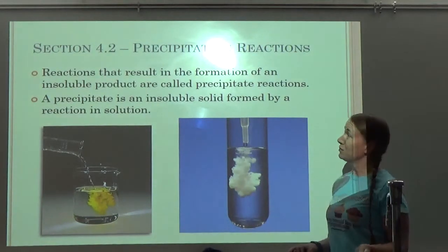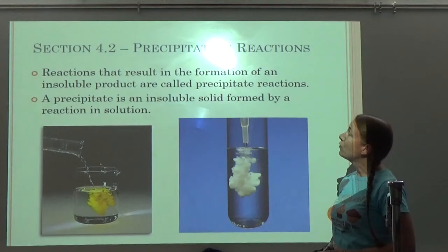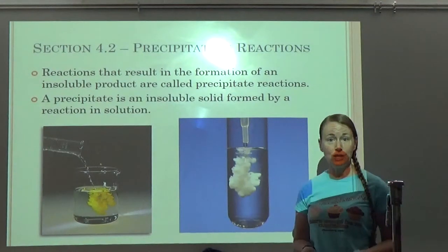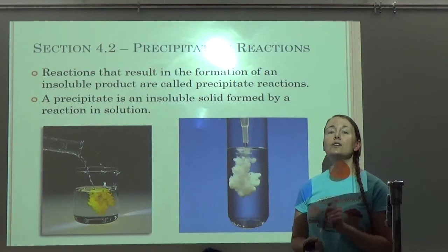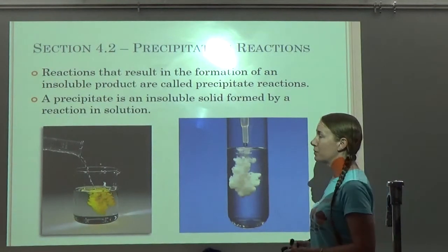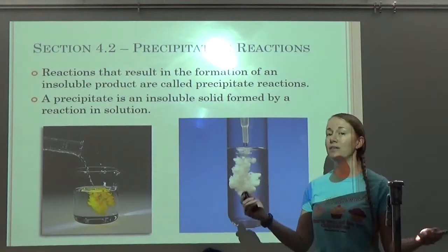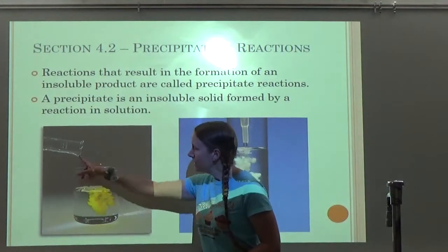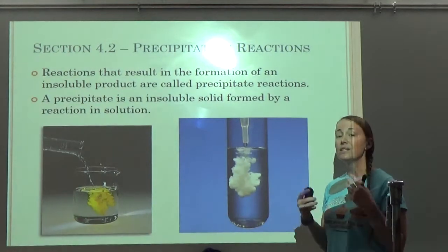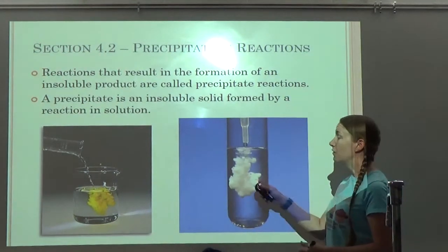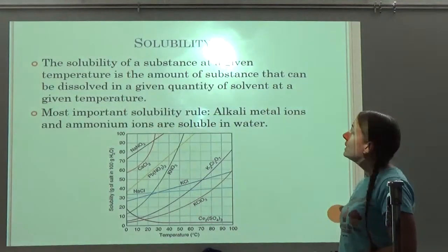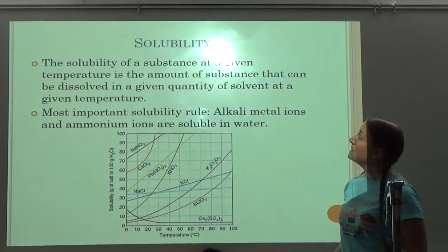Section 4.2 is the precipitate reaction section. Reactions that result in the formation of an insoluble product are called precipitate reactions. A precipitate is an insoluble solid formed by a reaction in a solution. For precipitates, you need to know your solubility rules. When you have a reaction occurring in a liquid and you form a solid, that solid is called a precipitate — the solid itself has to be insoluble. If what you think is a solid is actually soluble, it will remain aqueous.